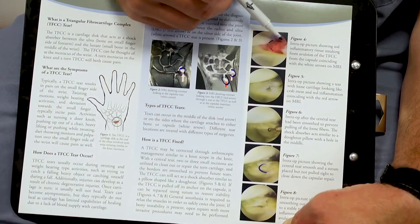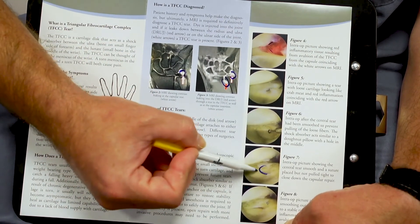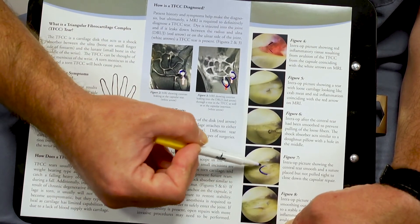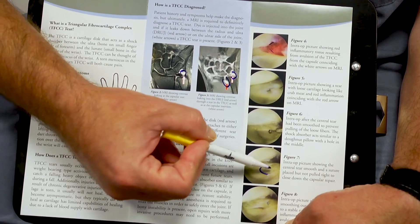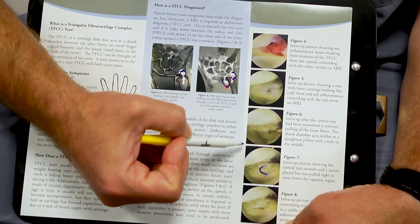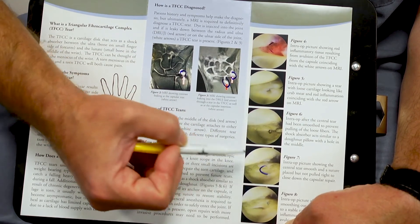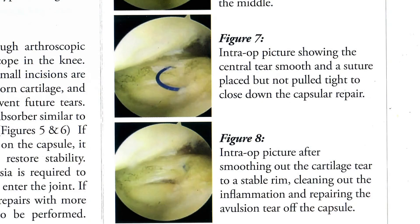We basically go in, clean out this inflammation, and then are able to put a stitch right here that closes that gap down. You can see this is after it's been pulled tight.